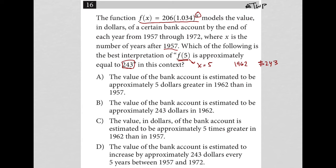Choice A says the value of the bank account is estimated to be approximately $5 greater. No, not at all. Choice B, the value of the bank account is estimated to be approximately $243 in 1962. Absolutely, I'm pretty sure that's the correct answer.